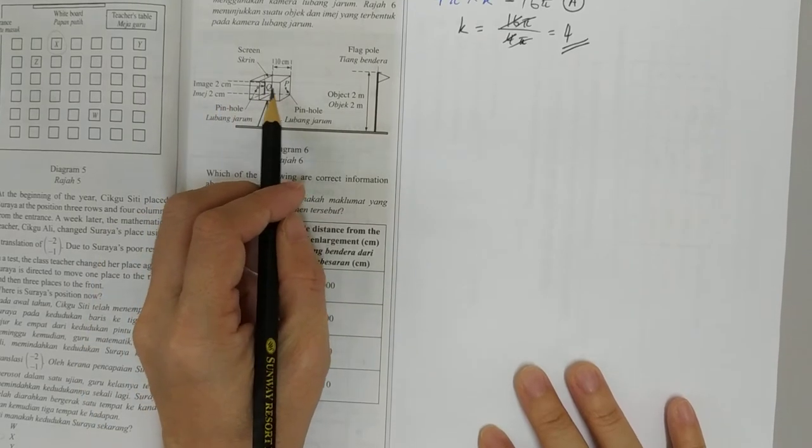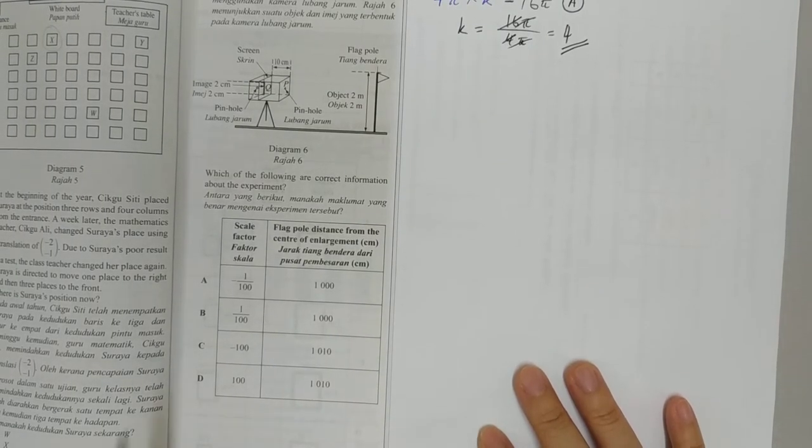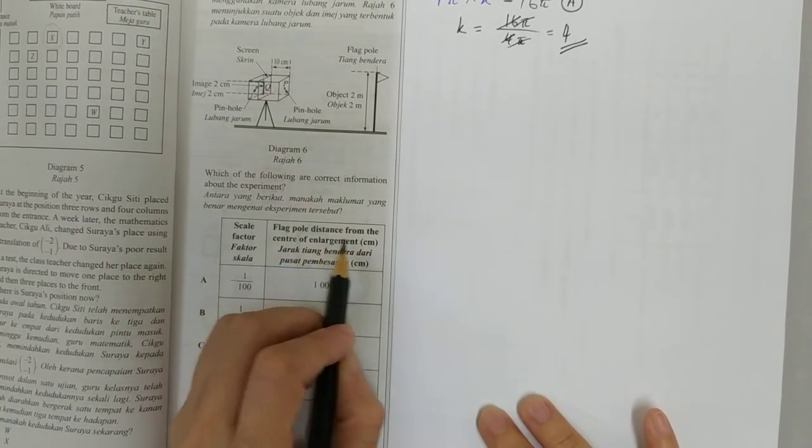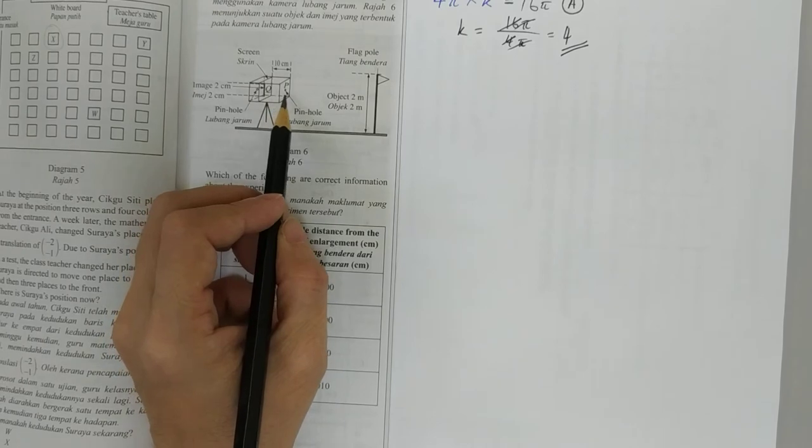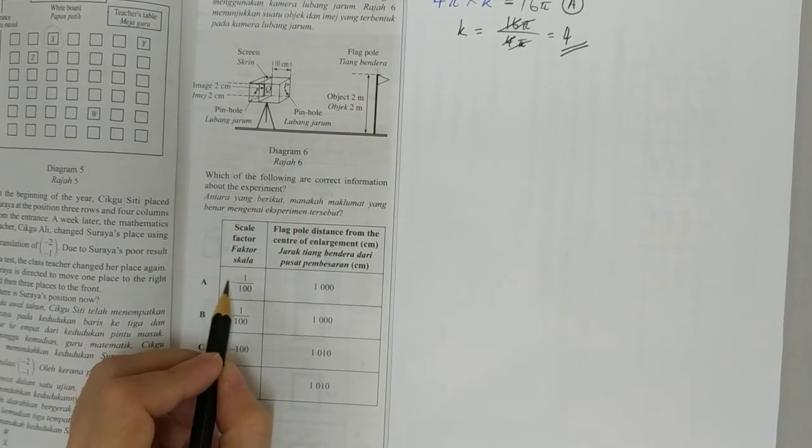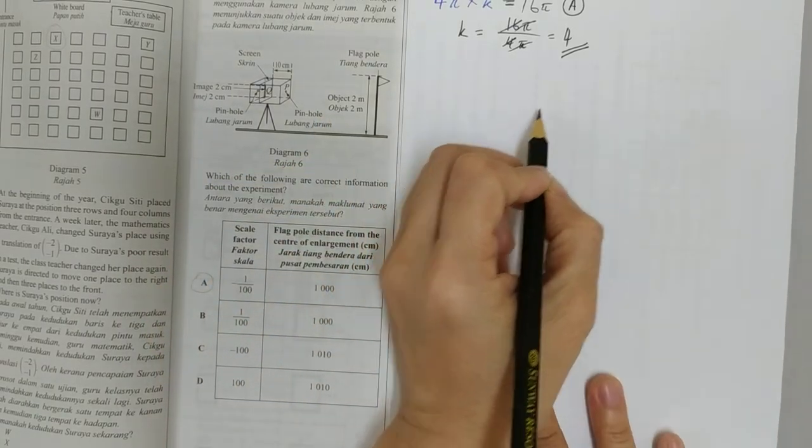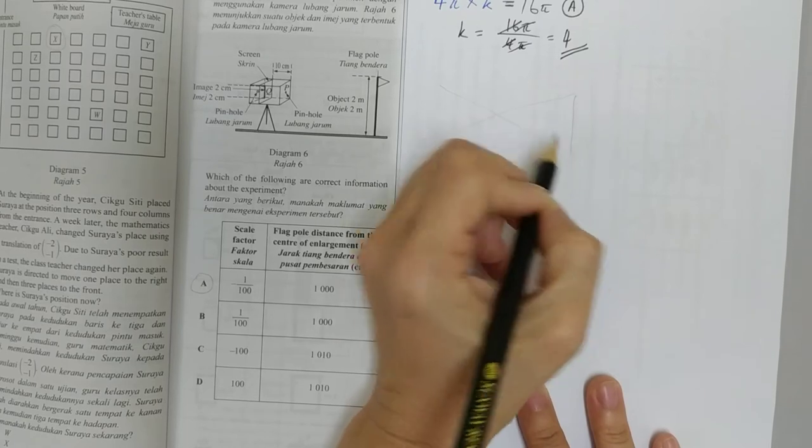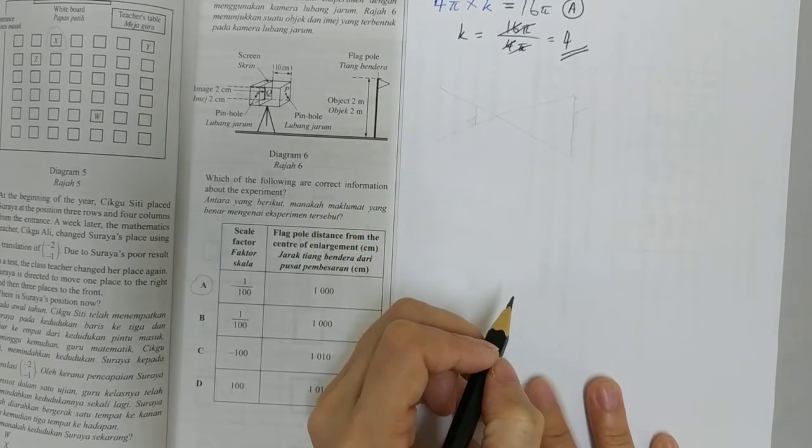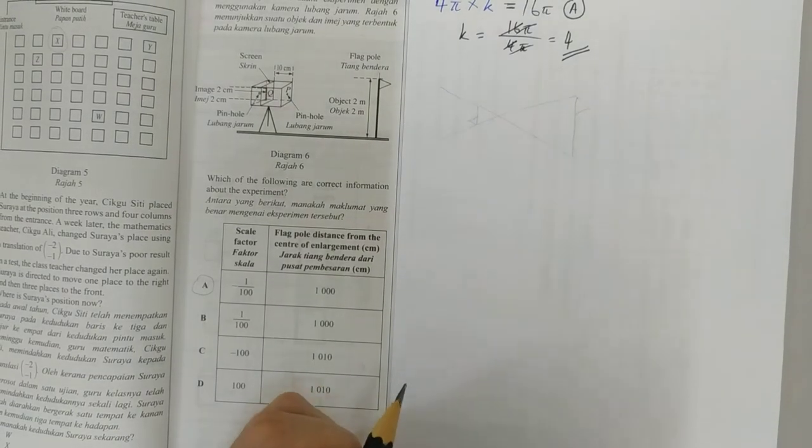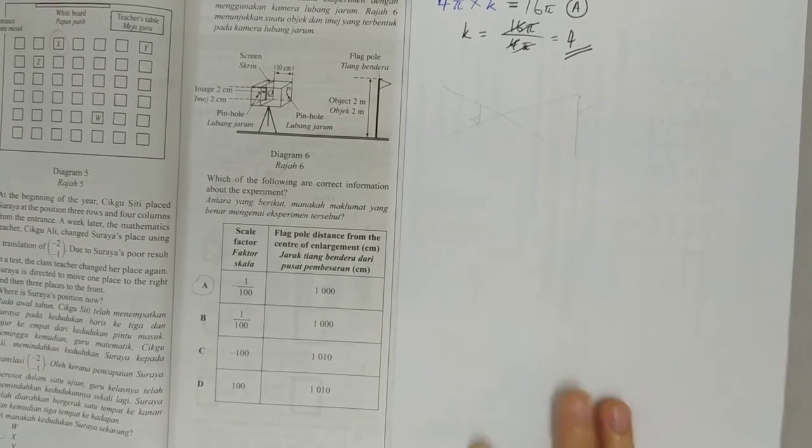And because it's upside down, it should be negative 1 over 100. And the distance here, 10cm. All we need to do is times 100. So it'll be 1,000. Flat pole distance from the centre of enlargement. The centre of enlargement will be the pinhole P here. So it's 1,000 here. And over here it should be a negative 1 over 100. The reason why is because it's on the other side of the centre of enlargement. It must be on the other side. So if it's like this, then it will be upside down like that. So that's question 9.